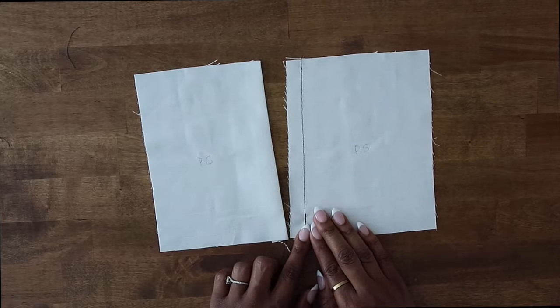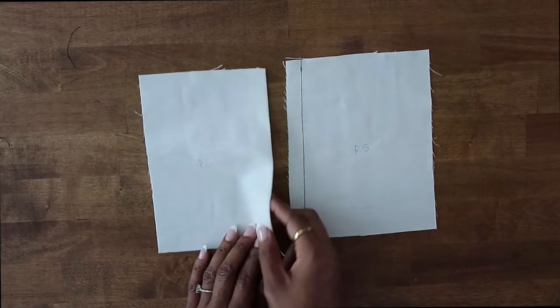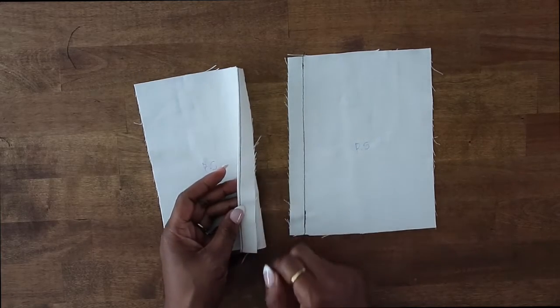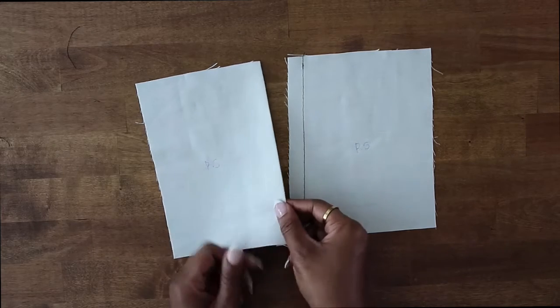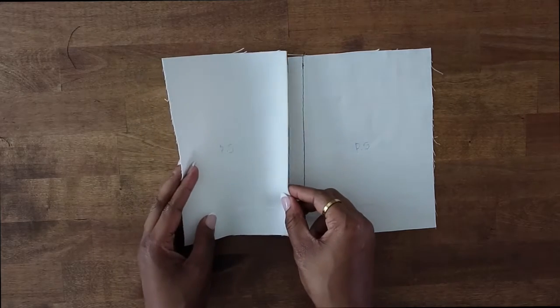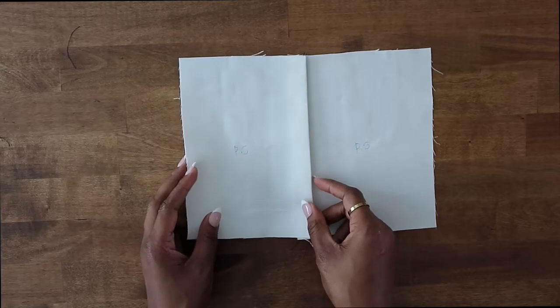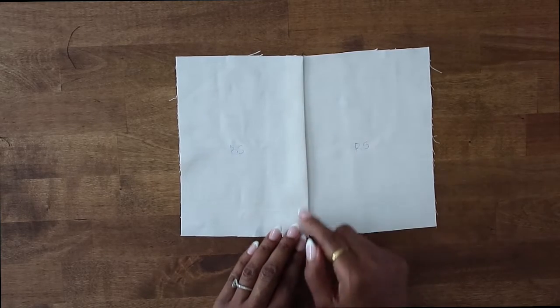With the right sides facing for the lapped seam, you take the piece of fabric that you have pressed under using your five-eighth of an inch seam allowance. You press under the seam allowance and you just lap it right over the other fabric, matching up the seam allowance.